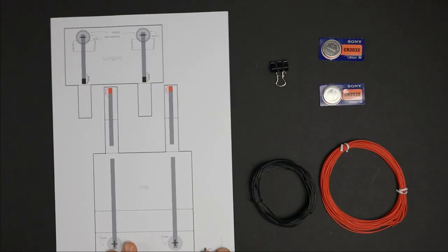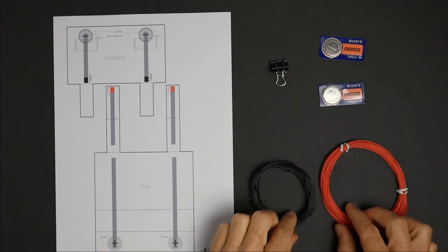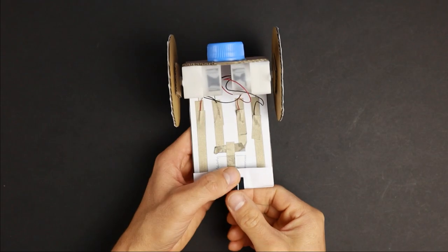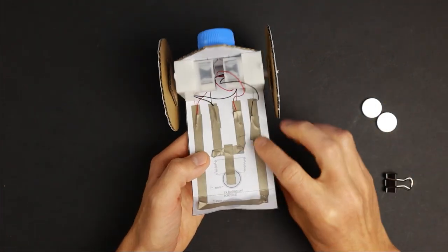For the remote control, you need two additional button cells, another binder clip and flexible red and black wire. The remote control will take care of the power supply, so remove the batteries from the robot.